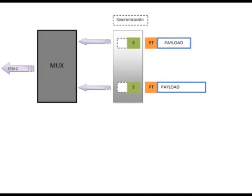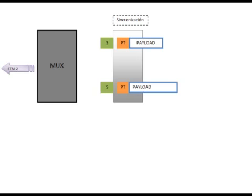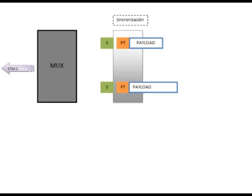En síntesis, antes de la multiplexación de tramas STM1, las etapas del FAS y punteros deben ser alineados. La modificación del puntero se denomina operación de ajuste de puntero. Durante este proceso, la información tributaria es retrasada, pero jamás modificada.